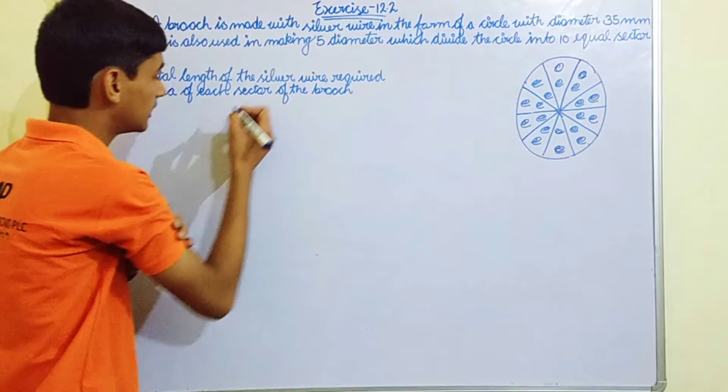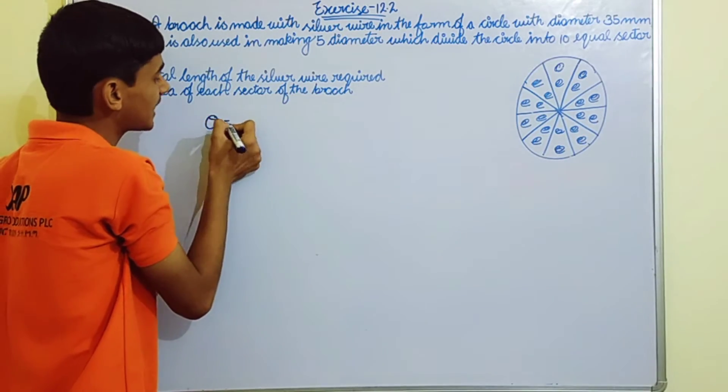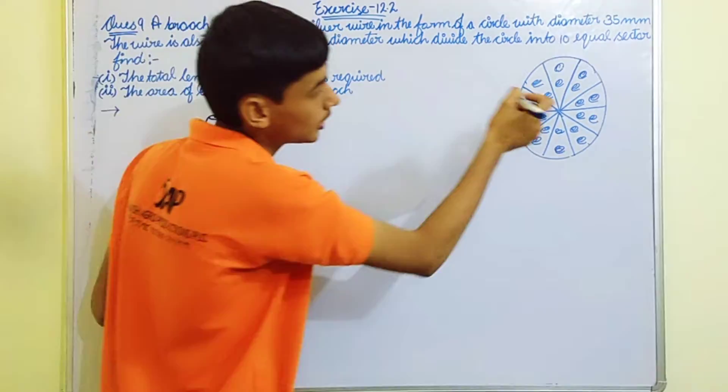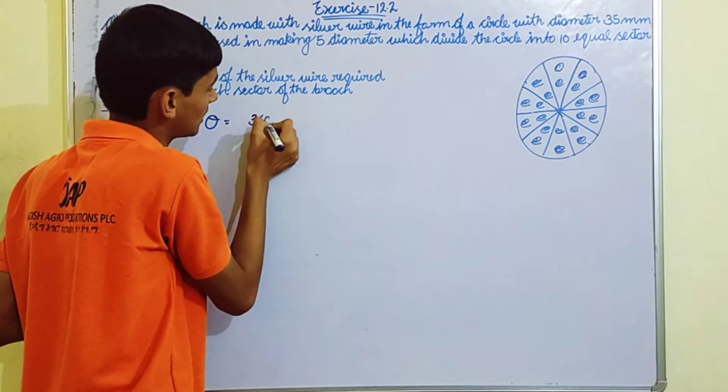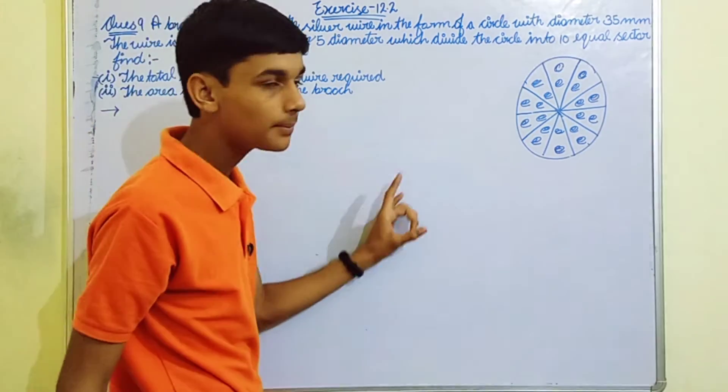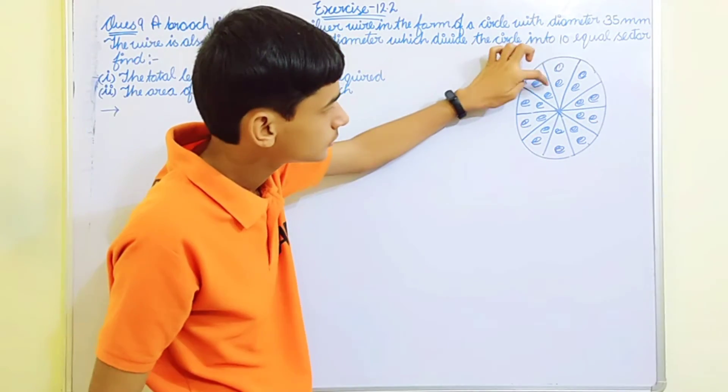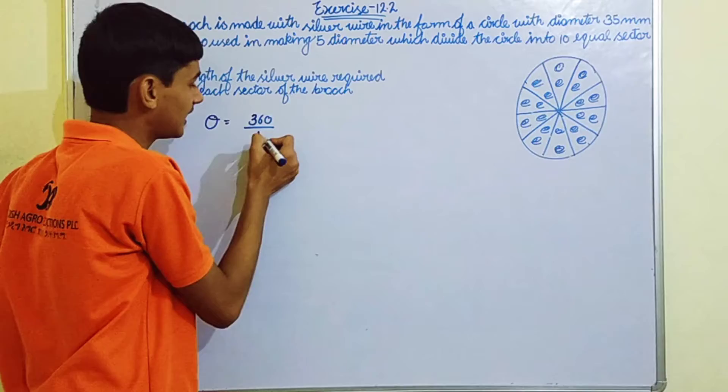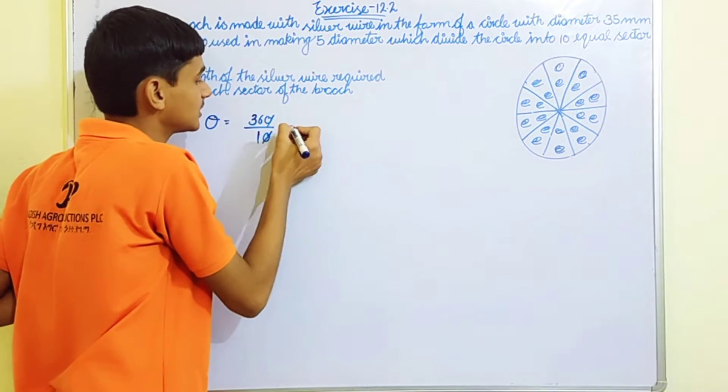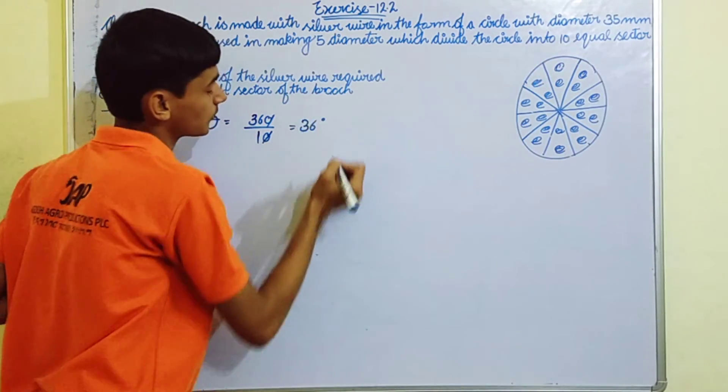360 degrees divided by how many parts? 1, 2, 3, 4, 5, 6, 7, 8, 9, 10. So divided by 10. After canceling, we get 36 degrees. So the theta of one sector came out to be 36 degrees.